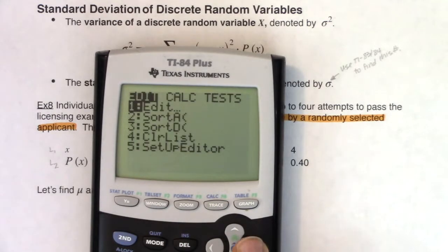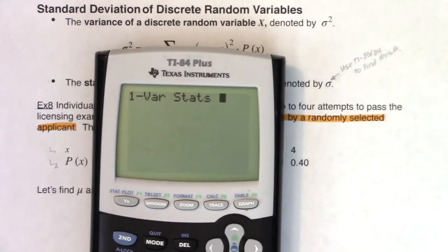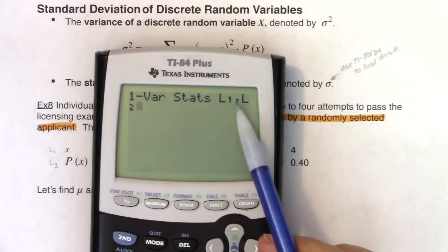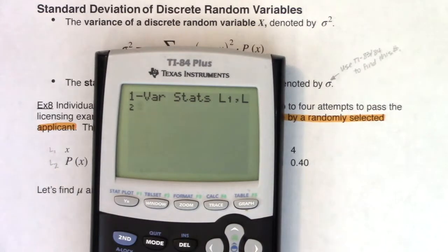All right, stat. Go to the right to calc. Let's hit enter or hit one. And I'm going to do L1, but I'm going to weight it with the probabilities in L2. So our variable is in L1, weight it with the probabilities in L2. Let's hit enter.